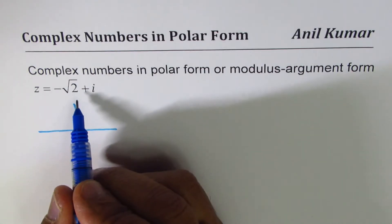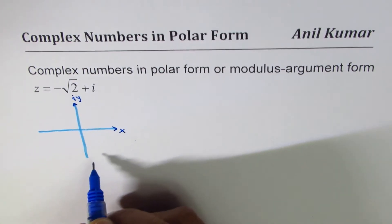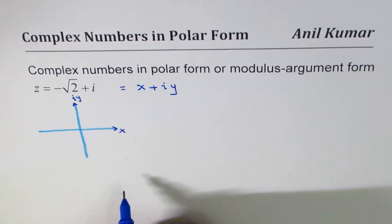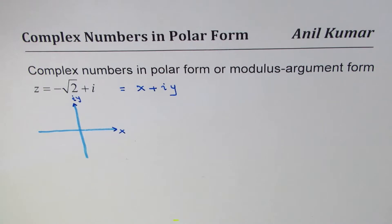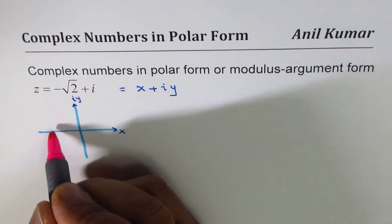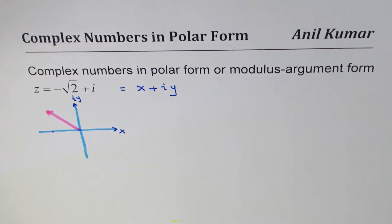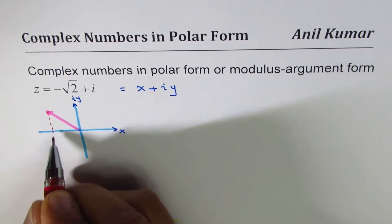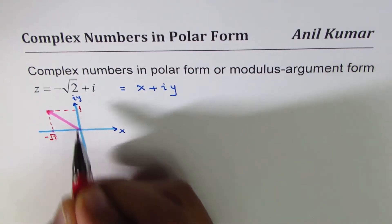In polar form, this is my real line and that's the imaginary part, so let's say i y and the real part is x. Any complex number could be written as x plus i y. So minus square root 2 will be on the left side and 1 is the imaginary part, so this represents the complex number z where the x value is minus square root 2 and the y value is 1.